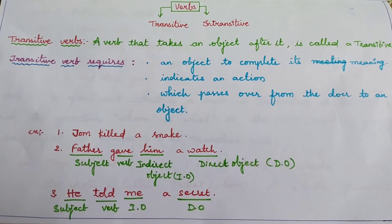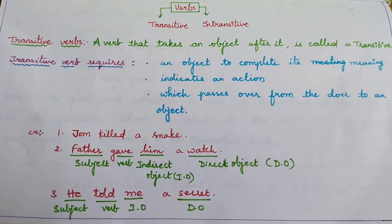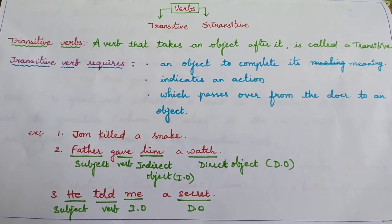What are transitive verbs? A verb that takes an object after it. If it takes an object after it, it is called a transitive verb.